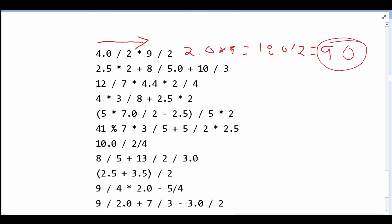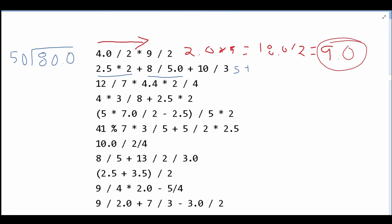In this next part, we have 2.5 times 2, which gives us 5. Then we're adding this to 8 divided by 5.0, which is going to be 1.6. So we have 5 plus 1.6 plus 10 divided by 3, which is 3. If we add all these together, we get 5 plus 3, which is 8, plus 1.6, giving us the answer 9.6.